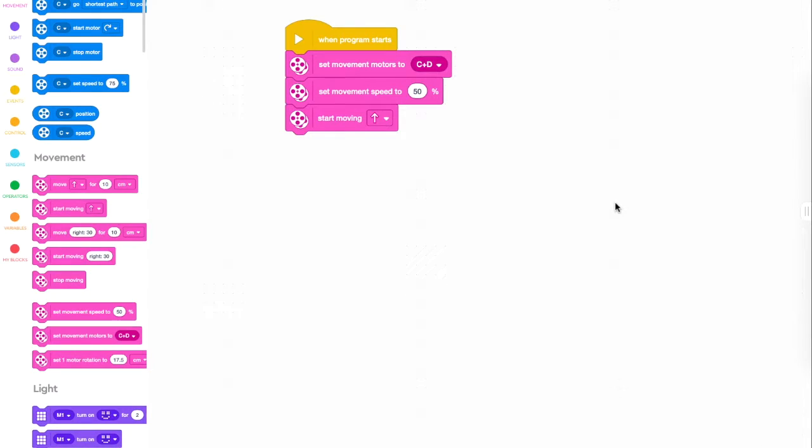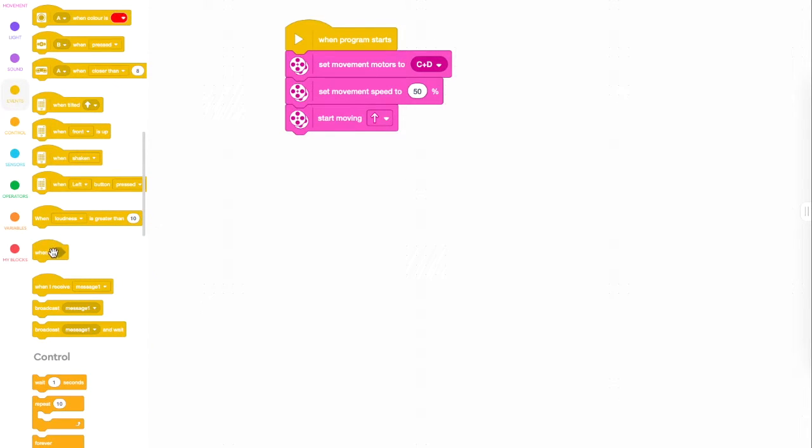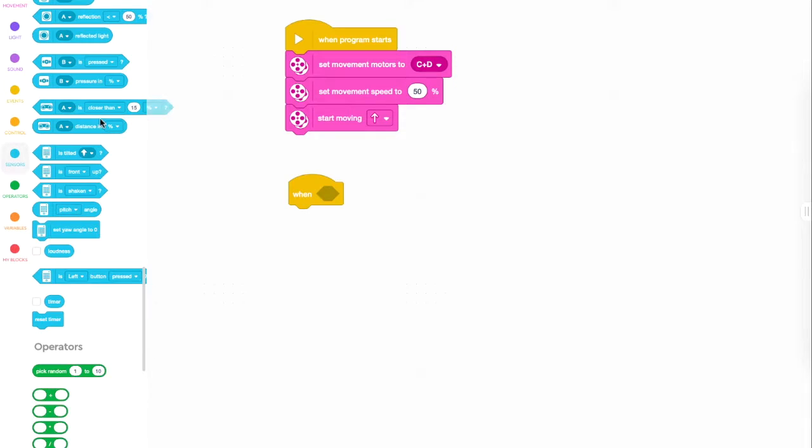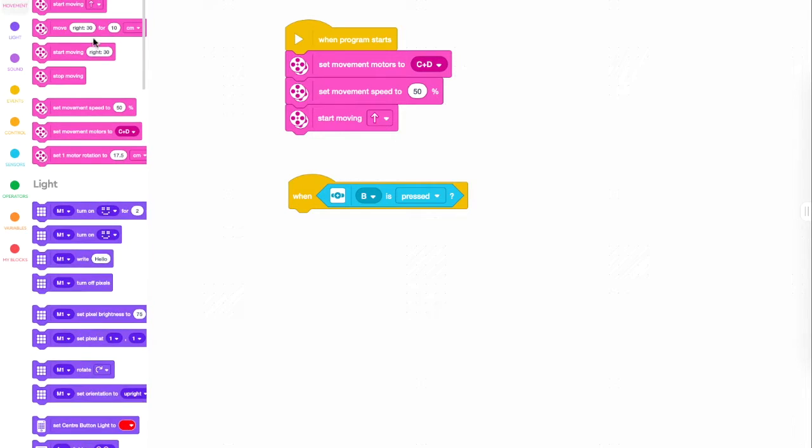After you've done that, we want it to bump into the wall. And there is a block that's called when, and it's in the events tab. If you choose the events tab, you can choose a block that says when, and then inside the little hexagon there, you can put a sensor block. To say when the button is pressed, we can get it to go backwards. So make sure it says B, because we plugged the button into port B, and then we're just going to go back to the pink movement motors and say start moving, but change the arrow to the opposite way so that the car goes in the opposite direction when the button is pressed.